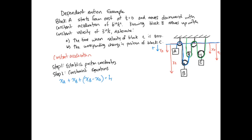The length of the second rope will be equal to xD, from the roof down to D, and then again the length of xD, and then the length of xC twice. So we have 2xD plus 2xC equals L2.